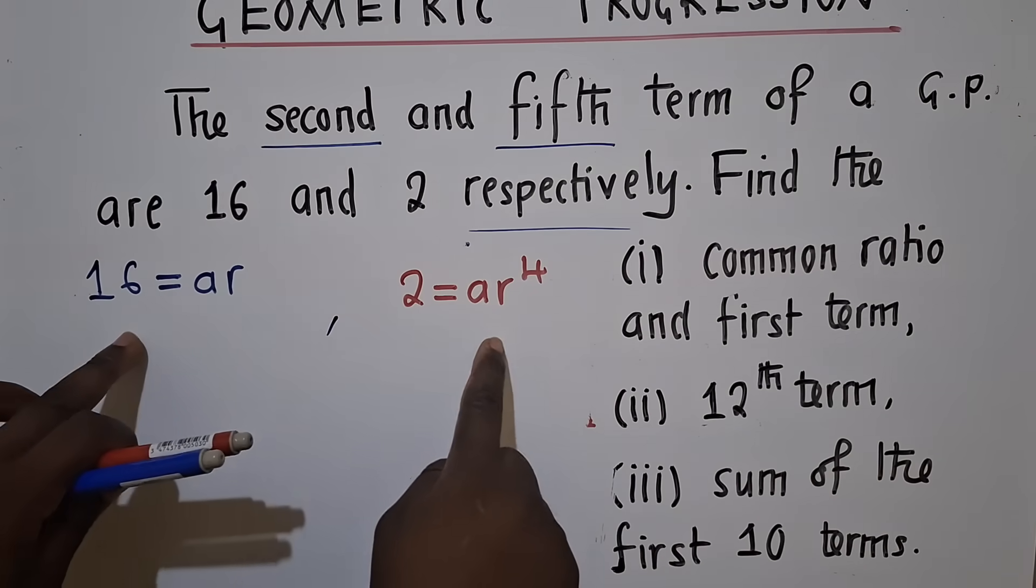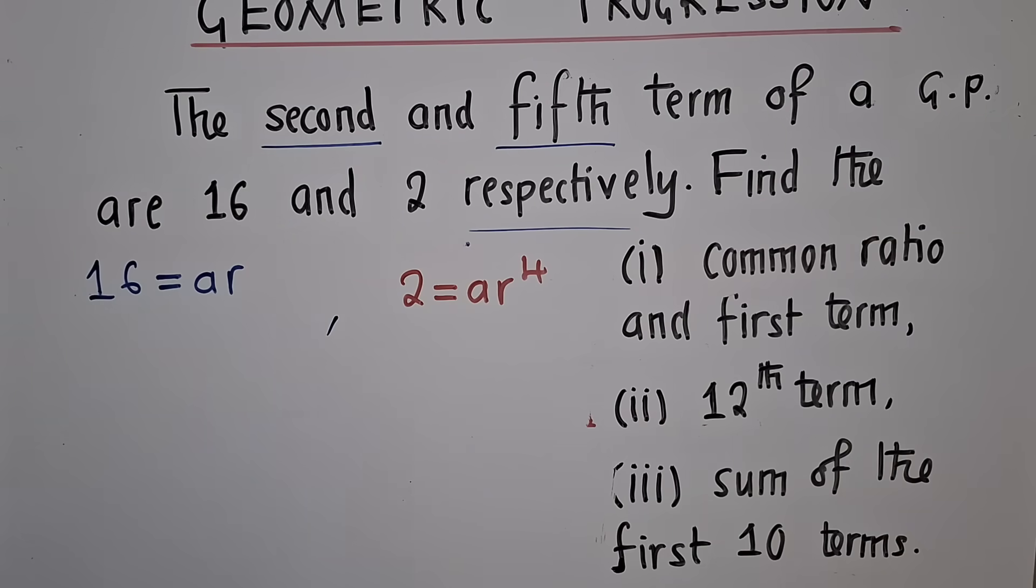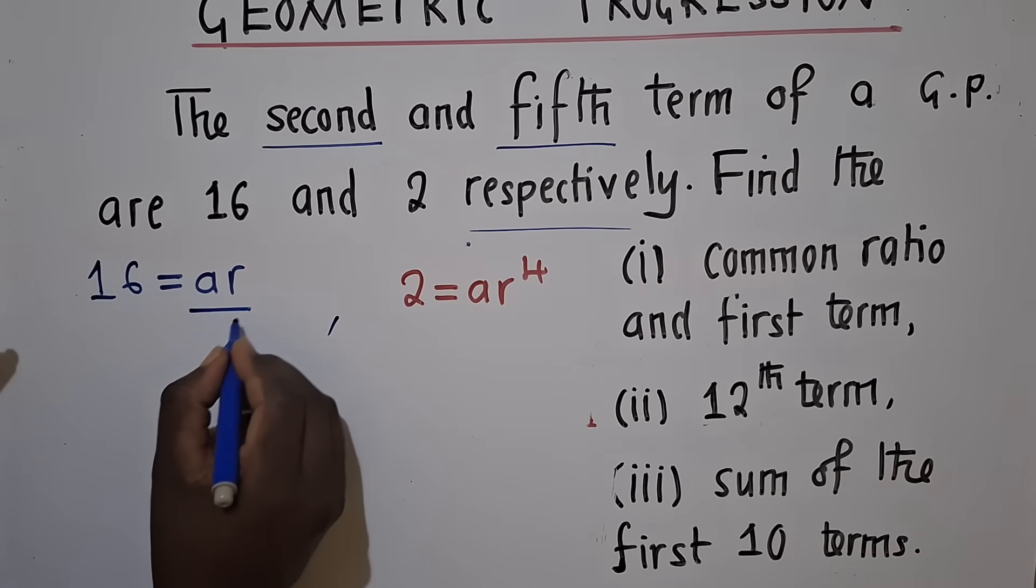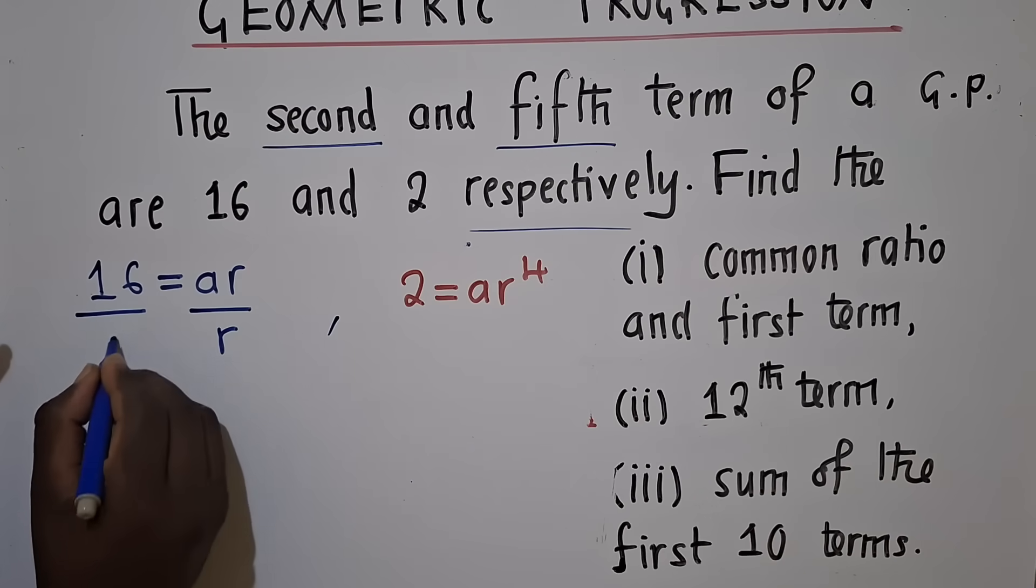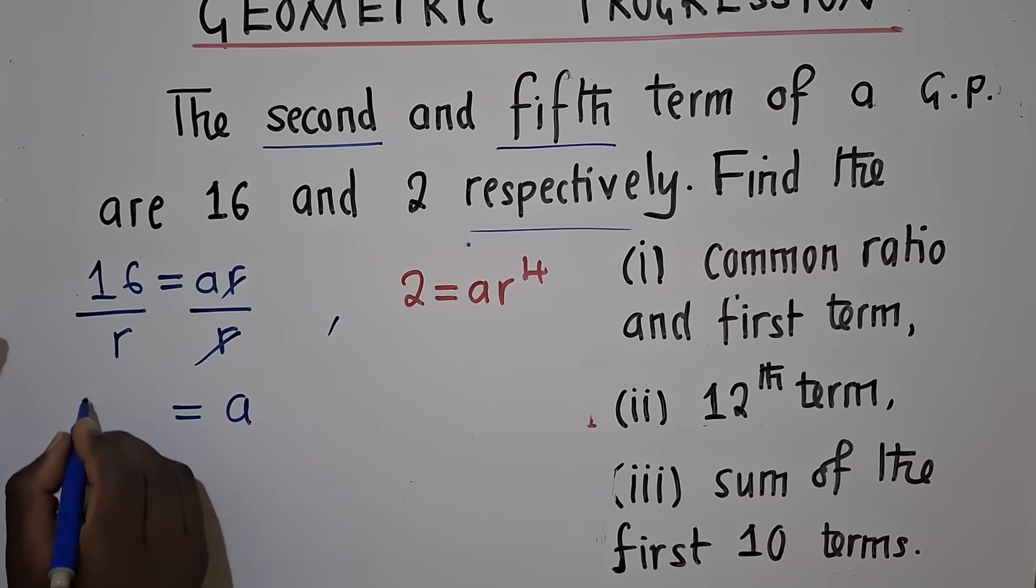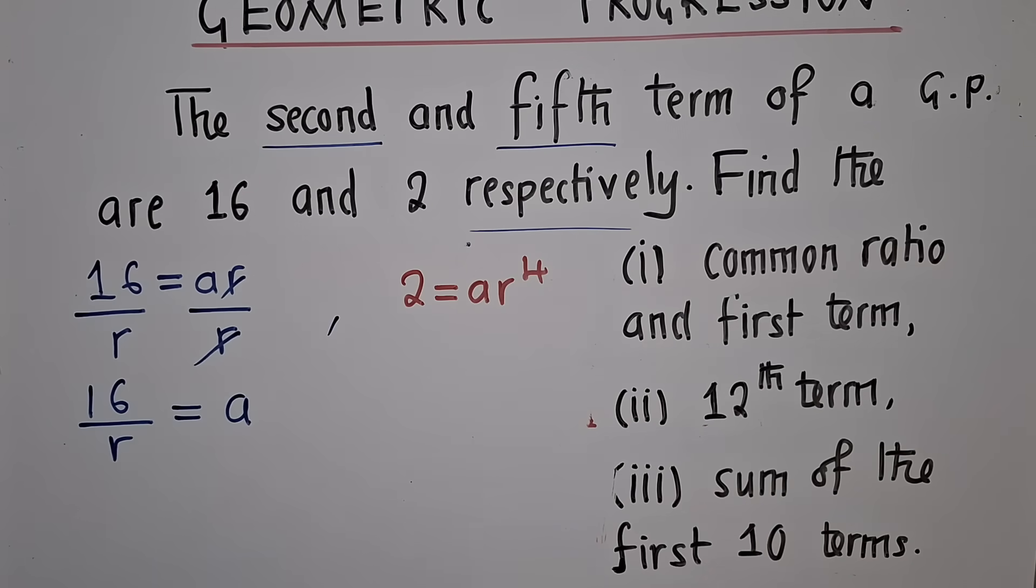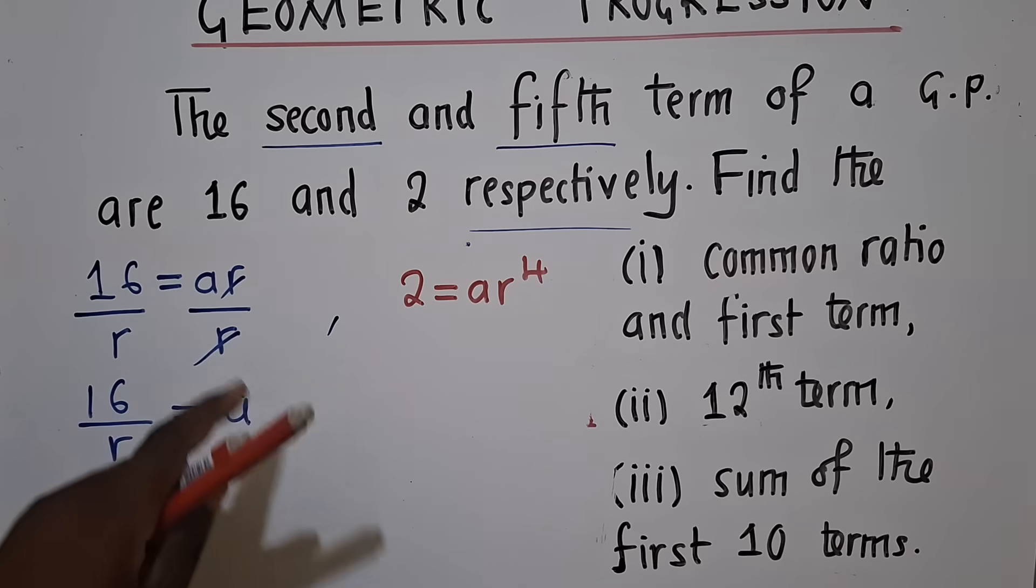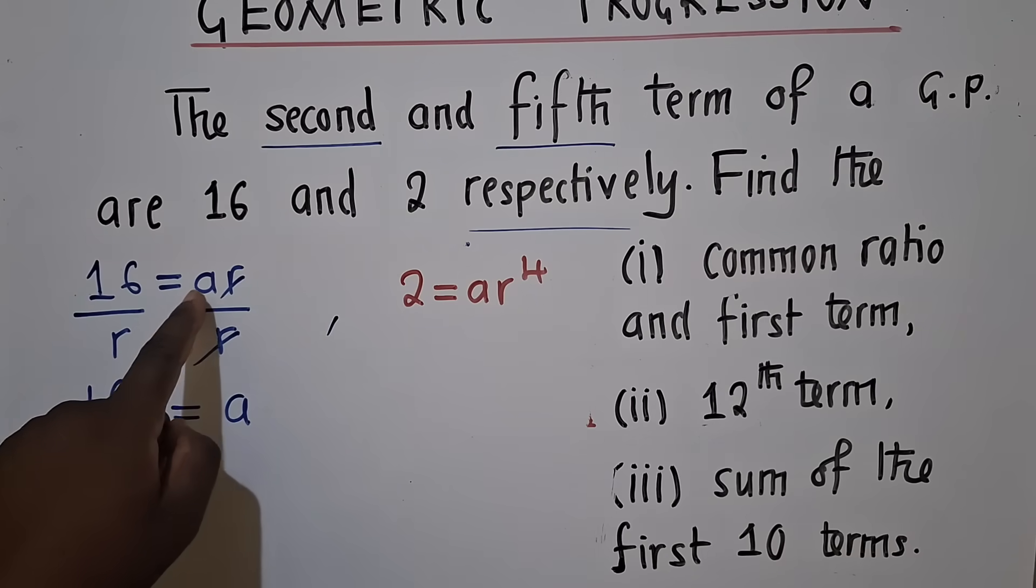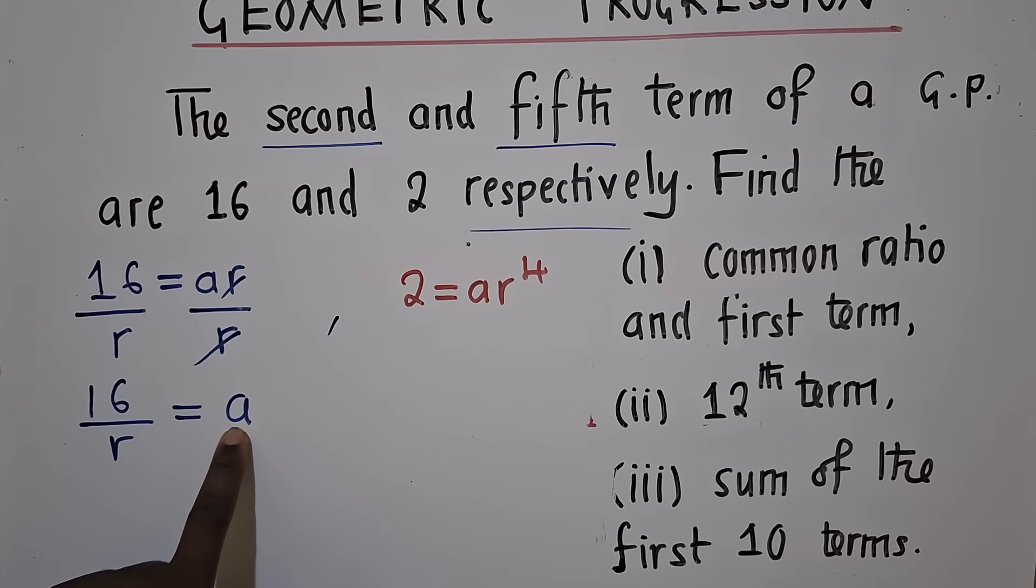To solve these two equations simultaneously, we're going to start with this equation. We divide both sides by R. So we've made A subject of the formula, or we wanted to separate A from R. So we've just remained with A here. A is equal to 16 over R.